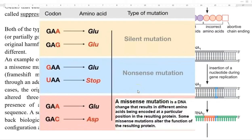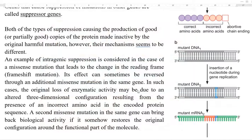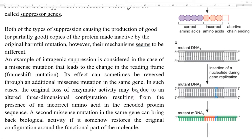An example of intragenic suppression can be considered in the case of a missense mutation that leads to a change in the reading frame — a frameshift mutation caused by intragenic suppression. The original loss of enzyme activity may be due to an altered three-dimensional configuration of the protein, mainly due to the presence of an incorrect amino acid in the protein. This incorrect amino acid can be replaced by a second missense mutation — the intragenic suppression mutation occurring after the first mutation.